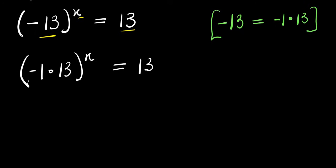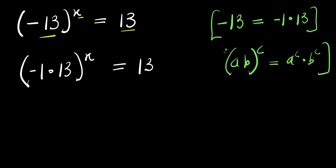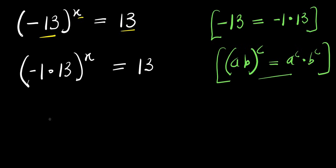The next identity will be: if you have a times b raised to the power of c, this equals a to the power of c times b to the power of c. You will apply this right here. So we will distribute the x to each of the terms, meaning we will have negative 1 to the power of x times 13 to the power of x equals 13.